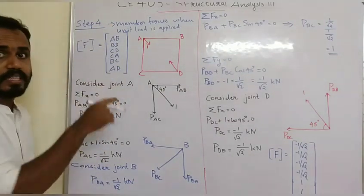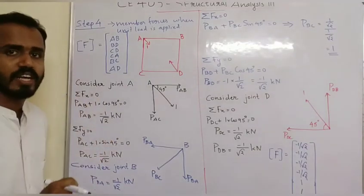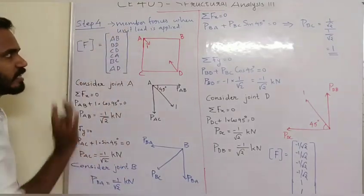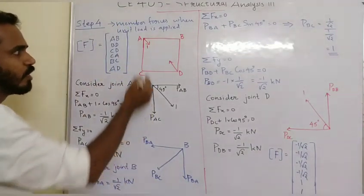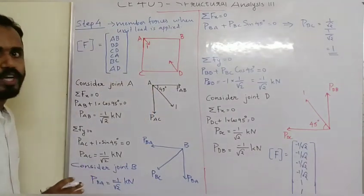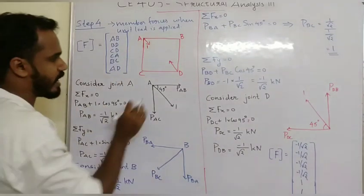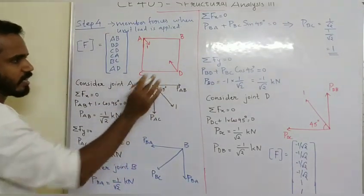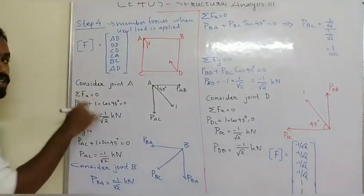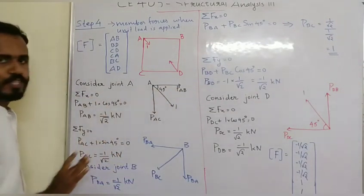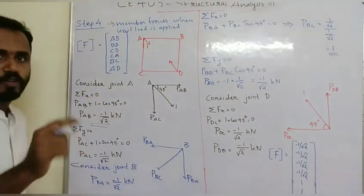When we have the external load and take the member force, we order the members: AB, BD, DC, CA, BC, AD — the same order. We apply a unit load. Consider joint A — we draw a free body diagram. Sigma Fx equals 0: PAB plus 1 into cos 45 degrees equals 0, so PAB is equal to minus 1 by root 2 kN.